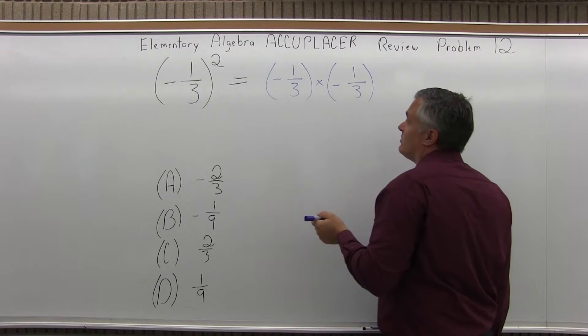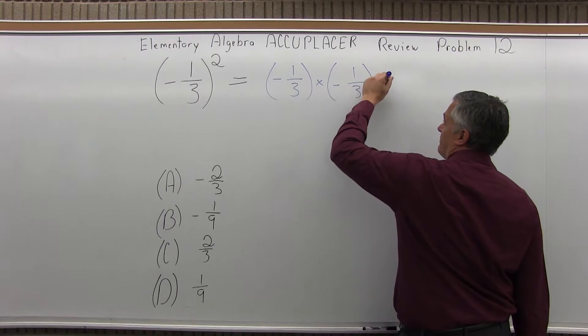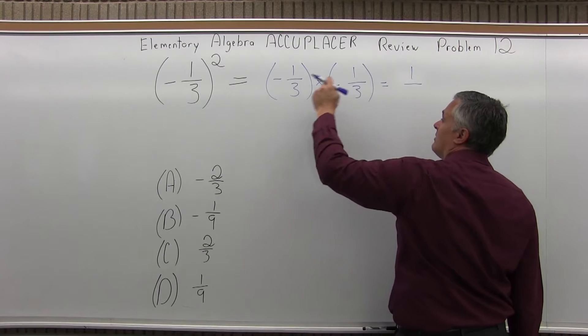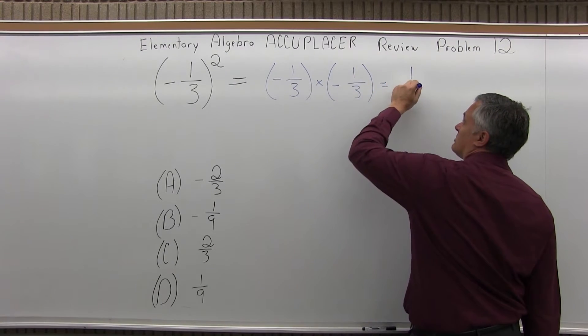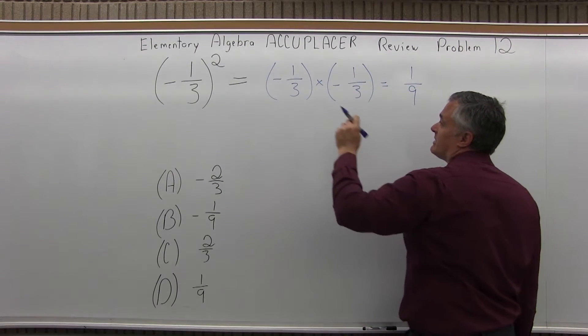Now when you multiply fractions you have to multiply top times top, one times one is one, bottom times bottom, three times three is nine and here's where you have to pay attention,